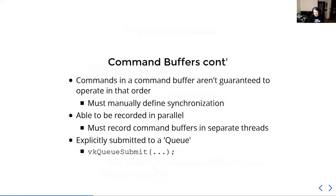There is a lot to say about synchronization. Things that are implicitly synchronized are mostly things that happen inside a render pass, which we won't cover in this tutorial. Outside of that, you pretty much have to define synchronization for everything manually. When I say synchronization, I mean memory execution dependencies — if a shader is writing to memory, you have to manually specify that a subsequent shader must have a barrier to prevent data races.